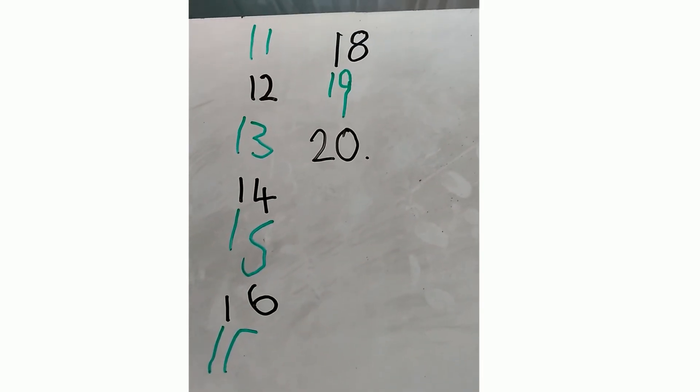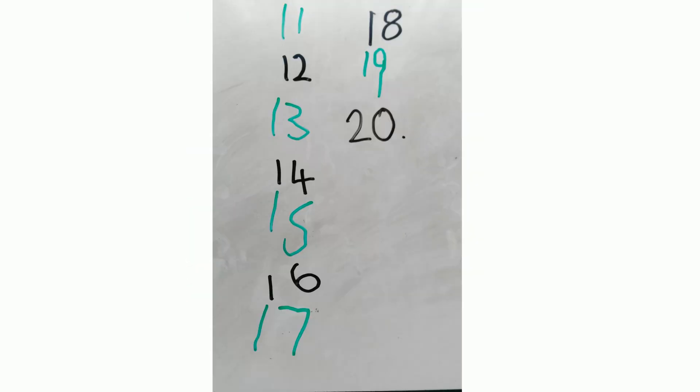Good. And then how do we do twenty? Twenty. Zero. You do it right here. Okay. It was your go. Oh, my go. Okay. Two and zero. Twenty. Well done.